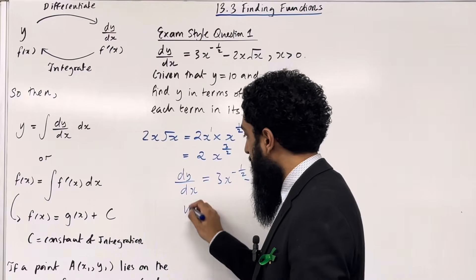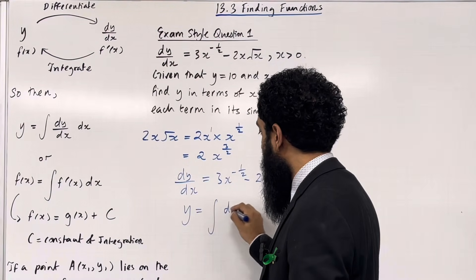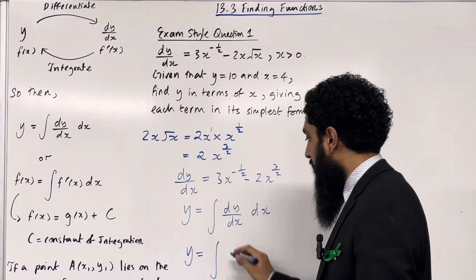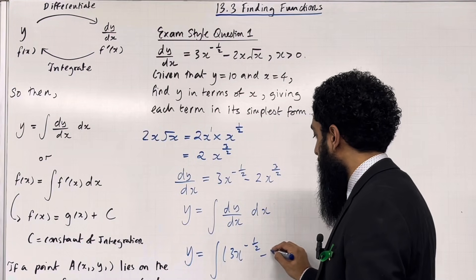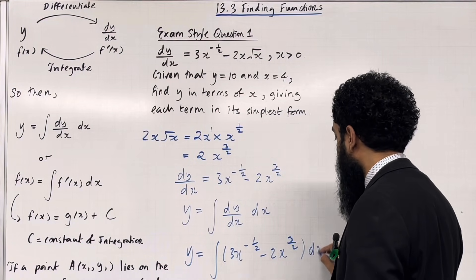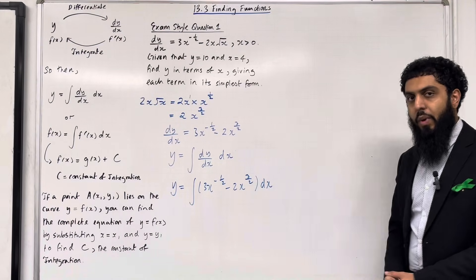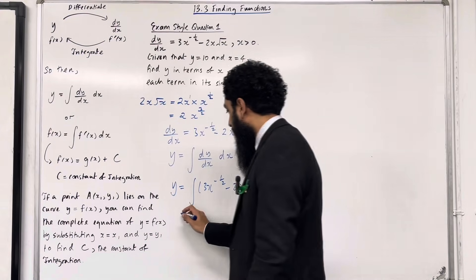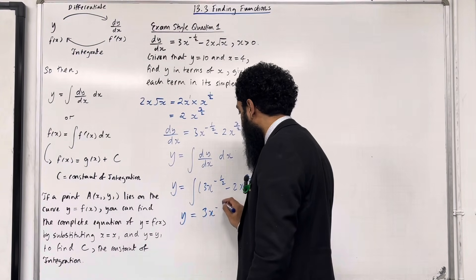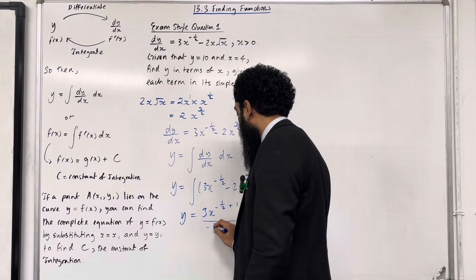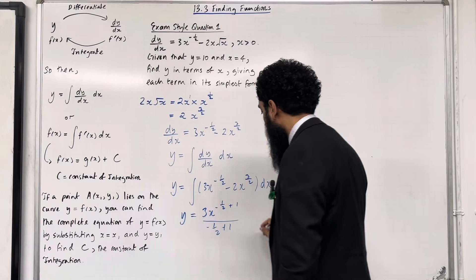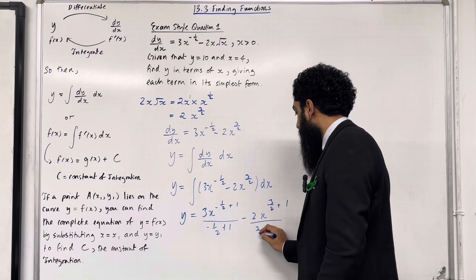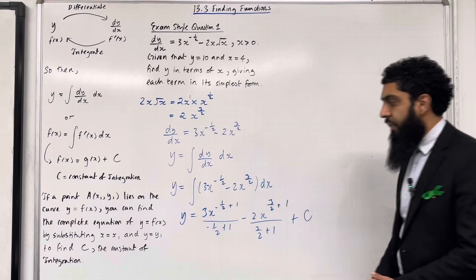To work out y, we need to integrate dy/dx with respect to x. So y is given by the integral of 3x^(-1/2) minus 2x^(3/2) with respect to x. Carrying out term-by-term integration — add 1 to the power, divide by the new power — we get y = 3x^(-1/2 + 1) / (-1/2 + 1) minus 2x^(3/2 + 1) / (3/2 + 1) plus c.